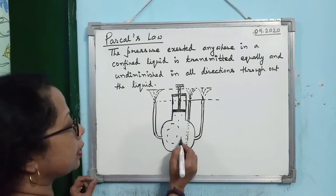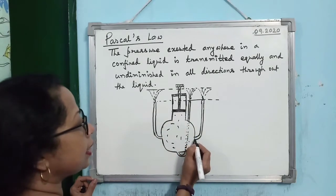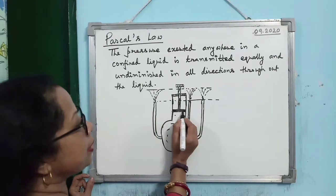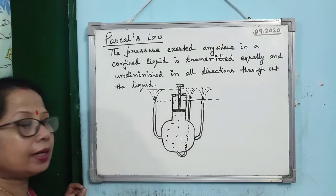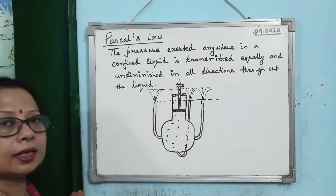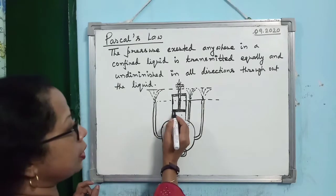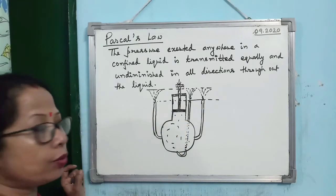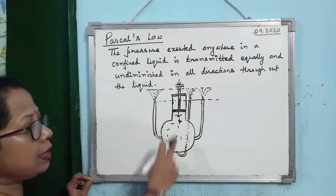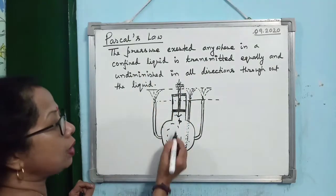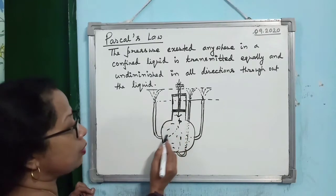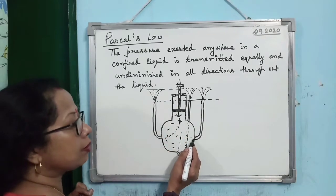Fill the container with water and keep the valves closed. There is a piston fitted at the neck of the container. When you slowly push the piston downward, you are applying a pressure P. According to Pascal's Law, this pressure will transmit in all directions — here, here, and here.